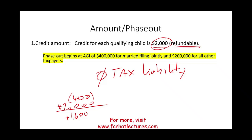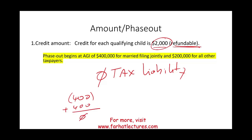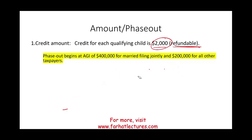If the child tax credit was not refundable, and you owed the government $400, then you could only use $400 to bring your liability down to zero. But because the child tax credit is refundable, it goes above and beyond — even if you don't owe the government any money, you'll get the additional $2,000.